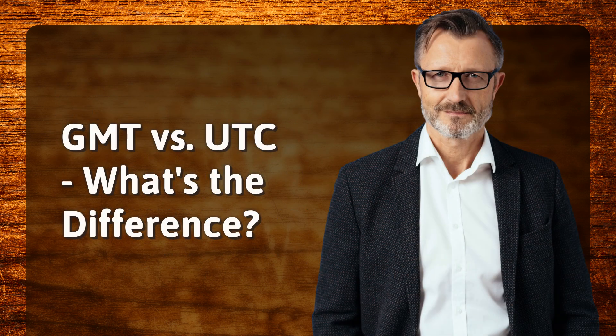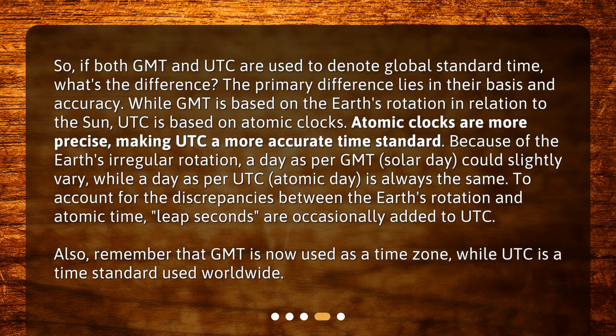So what's the difference between GMT and UTC? The primary difference lies in their basis and accuracy. While GMT is based on the Earth's rotation in relation to the Sun, UTC is based on atomic clocks, making UTC a more accurate time standard. Because of the Earth's irregular rotation, a day as per GMT — a solar day — could slightly vary, while a day as per UTC — an atomic day — is always the same. To account for discrepancies between the Earth's rotation and atomic time, leap seconds are occasionally added to UTC. Also, remember that GMT is now used as a time zone, while UTC is a time standard used worldwide.